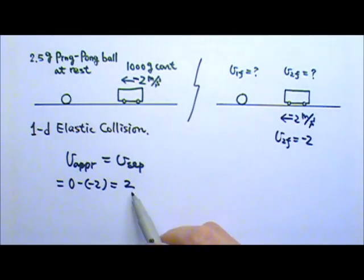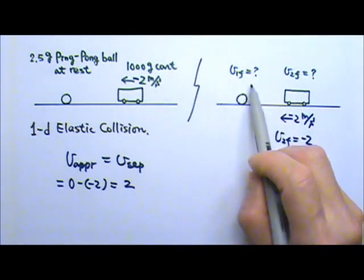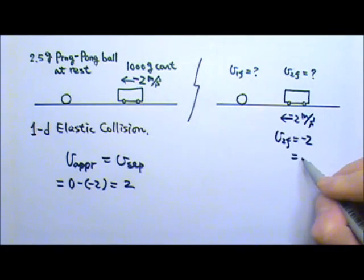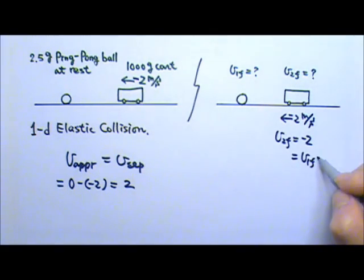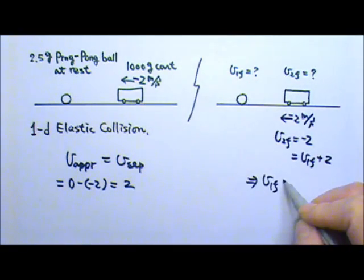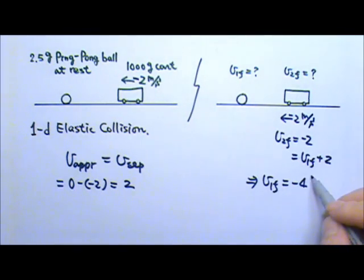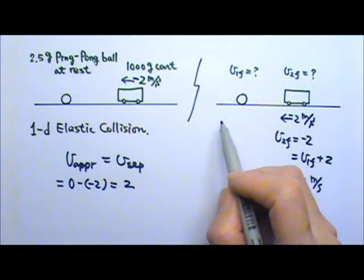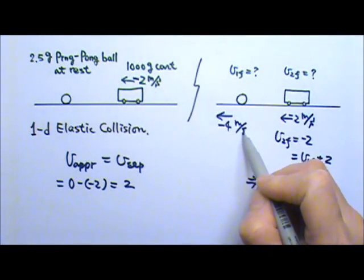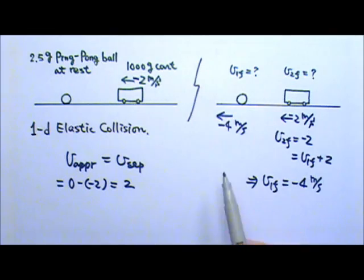So if this one moves at V1F, then the V2F must equal to V1F plus the separating speed 2. And this will give us V1F is negative 4 meters per second. So the ping-pong ball must travel back that way at 4 meters per second after the collision.